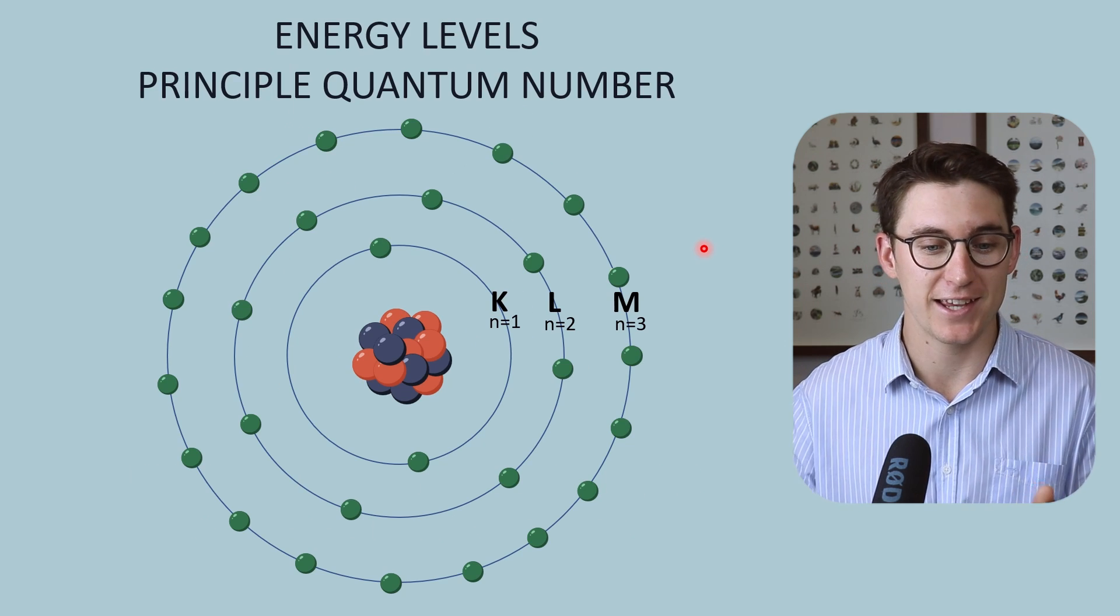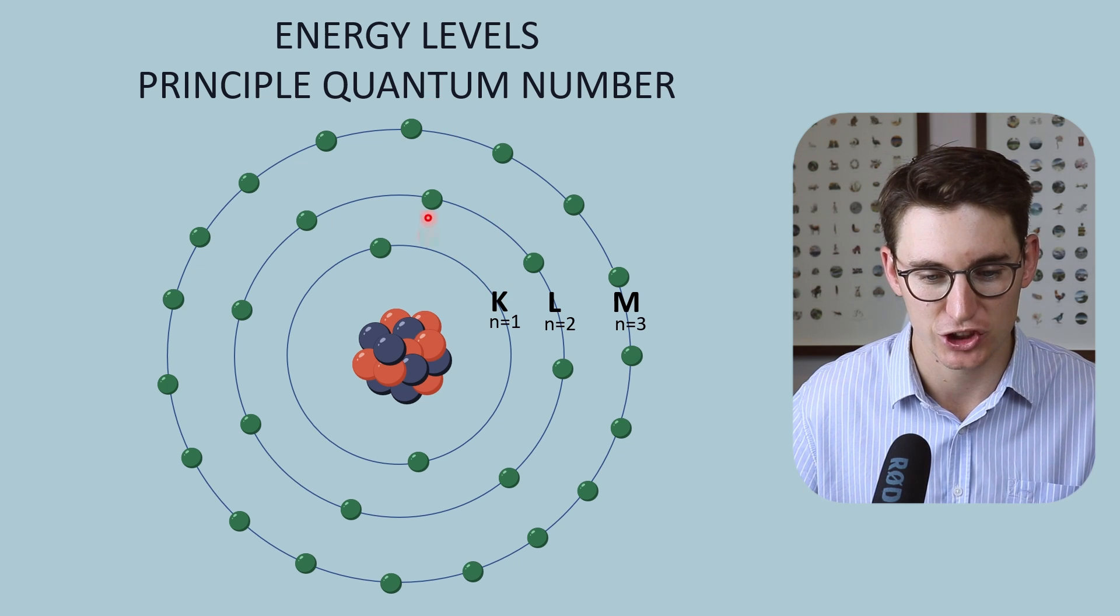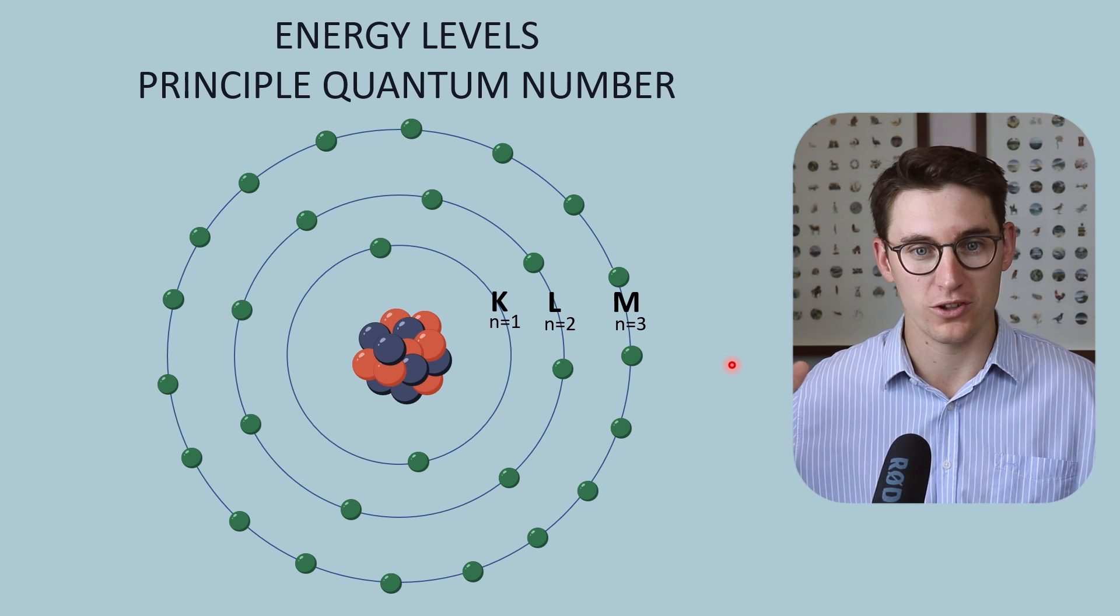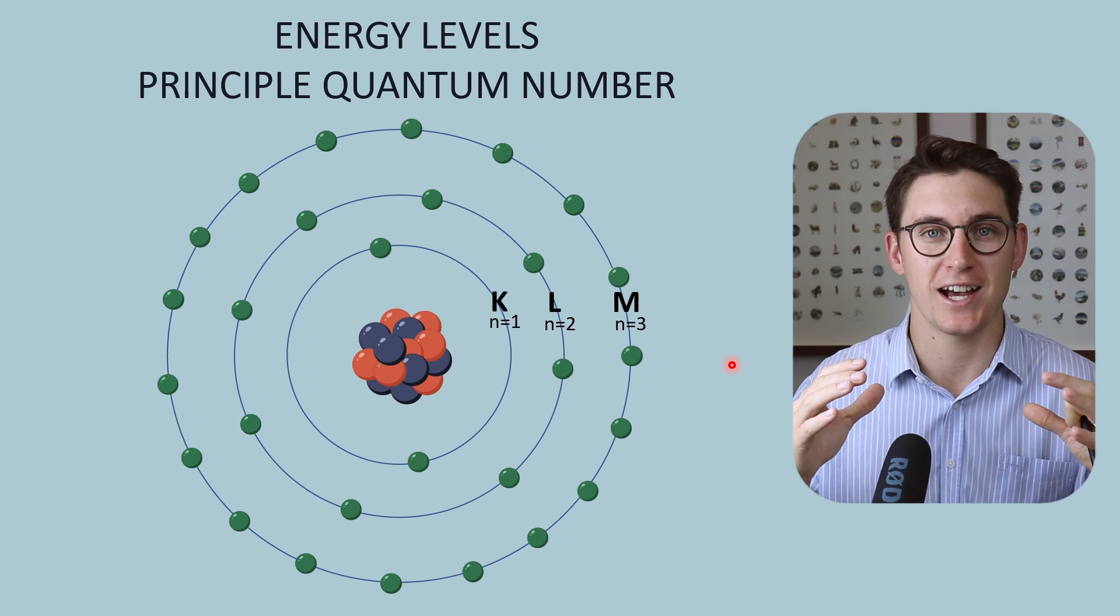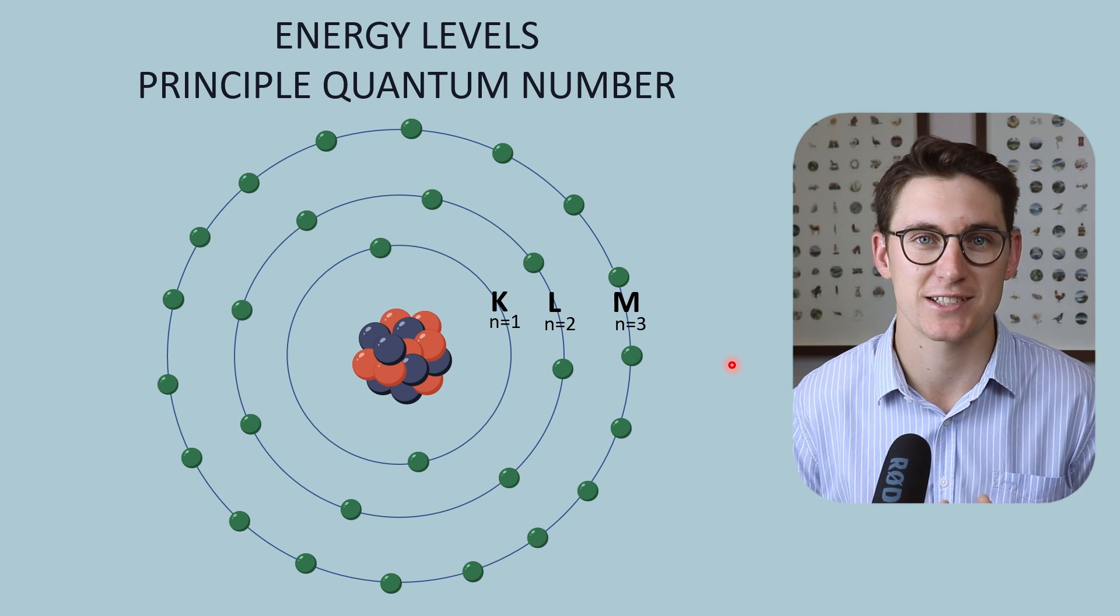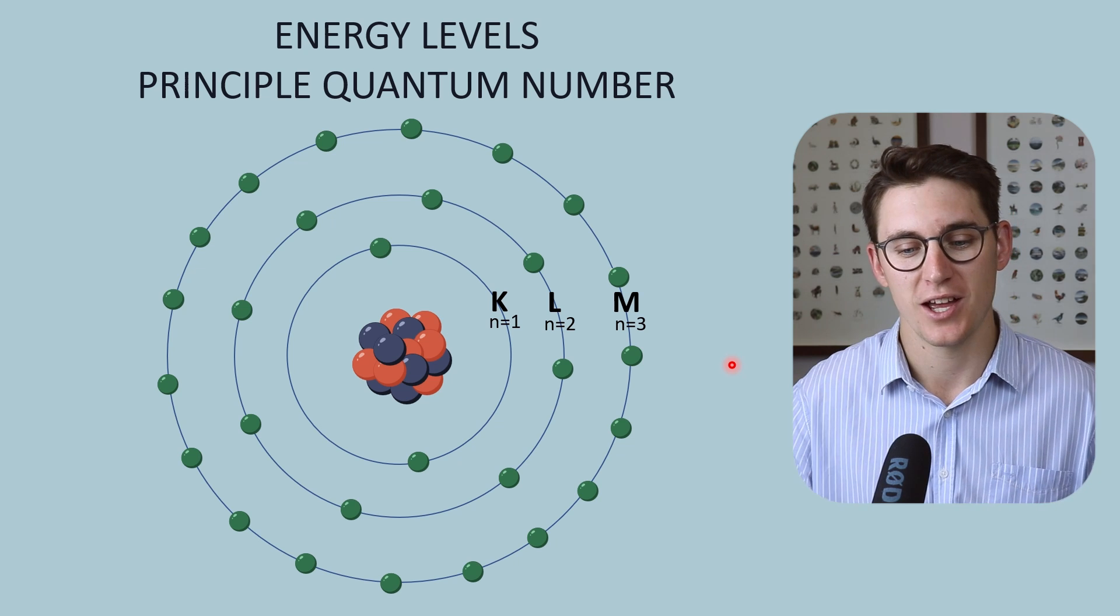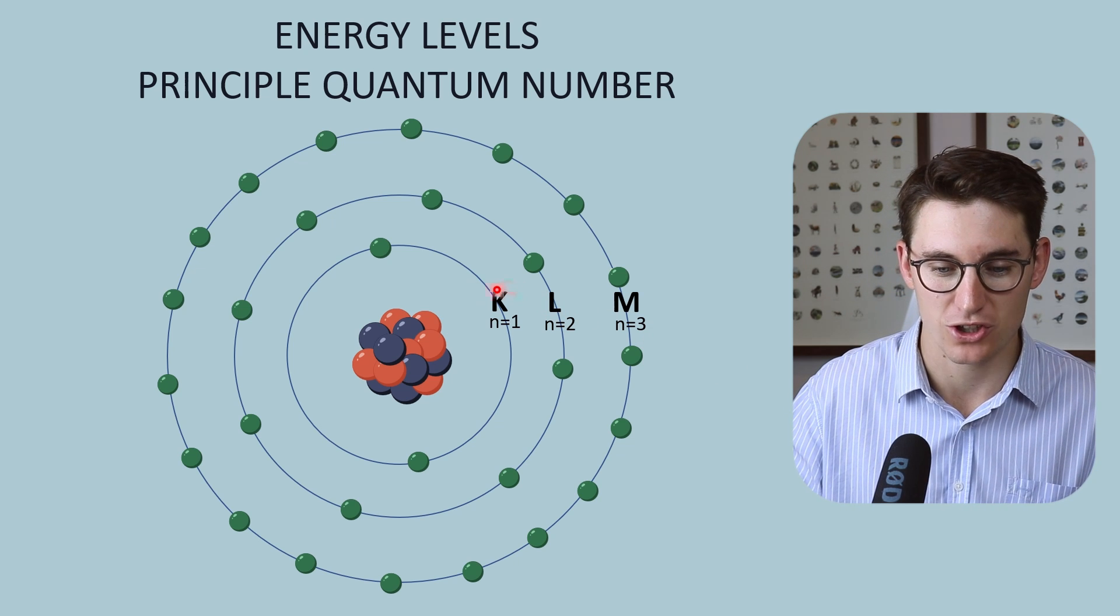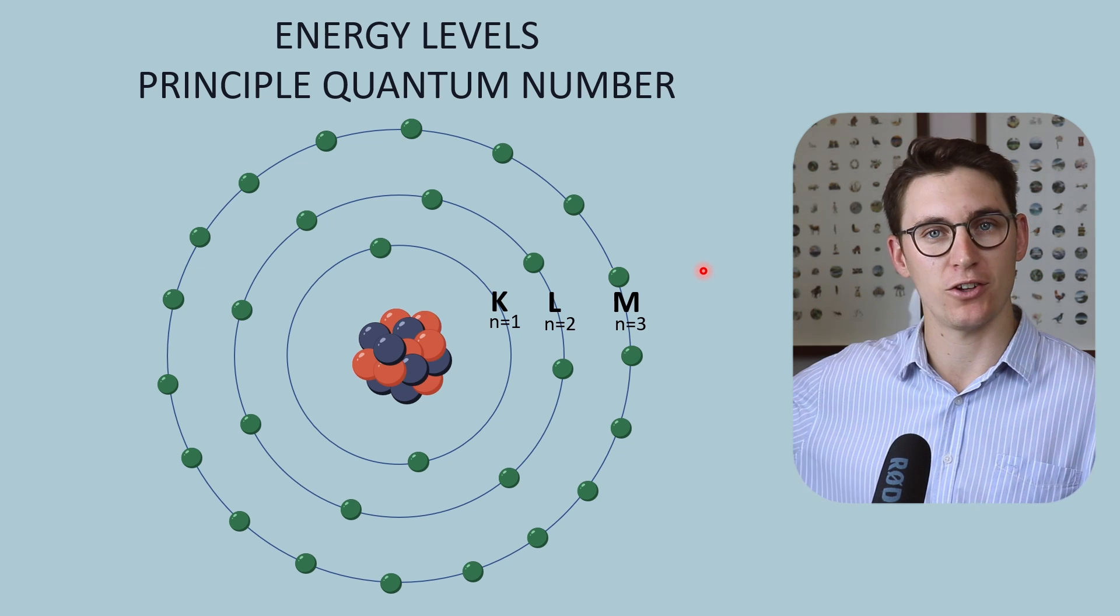Let's have a look again at that Rutherford Bohr model of the atom and we can see these electron shells or energy levels extending out from the nucleus. You can see that the number of electrons that those shells can house increases as we extend away from the nucleus. Now we go about naming these shells via this nomenclature here where we start at the letter K and we work our way out, L-M-N-O-P.